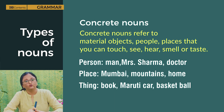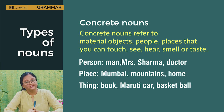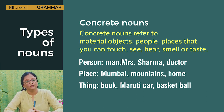Concrete nouns refer to material objects, people, and places that you can touch, see, hear, smell or taste. Persons: man, Mrs. Sharma, doctor. Places: Mumbai, mountains, home, river, park. Things: book, Maruti car, basketball, toys.